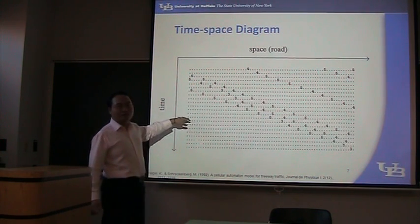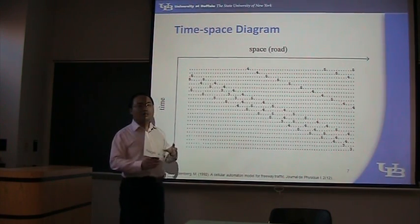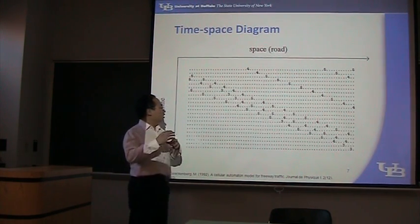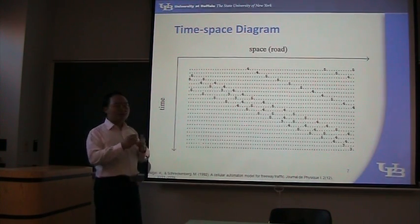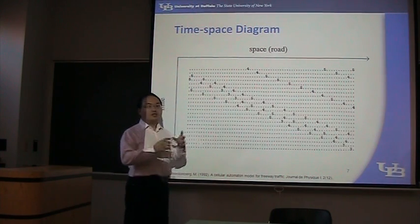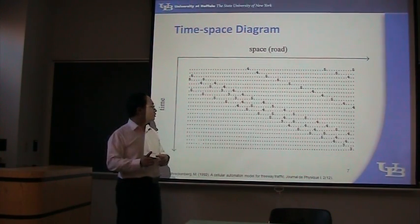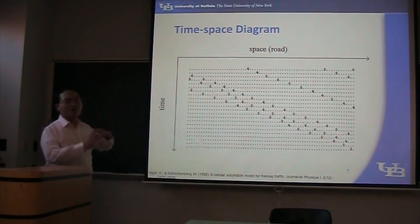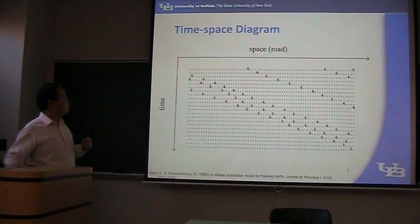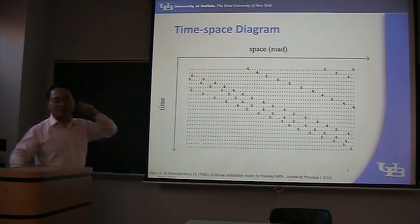Any questions about this? Remember: each cell in cellular automata has some states. Each cell can be occupied by at most one vehicle. And the speed of the vehicles changes according to simple rules. That's the one-dimensional cellular automata.